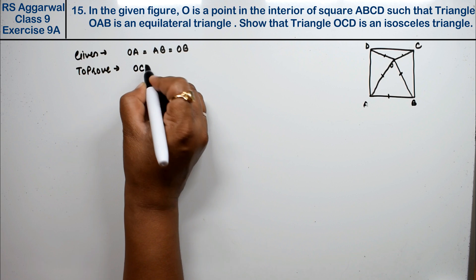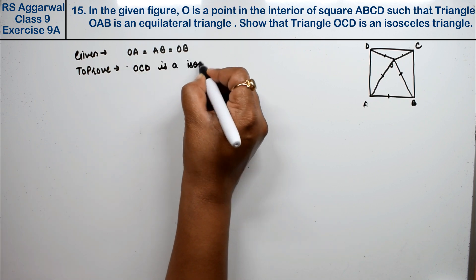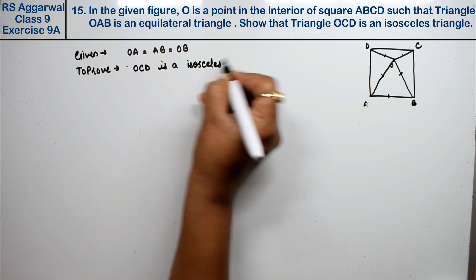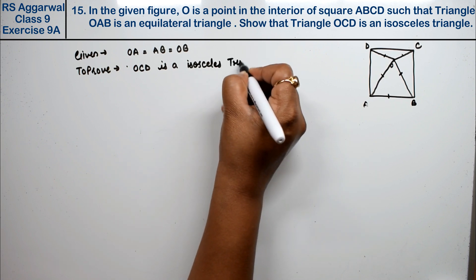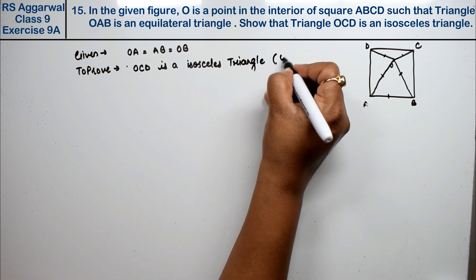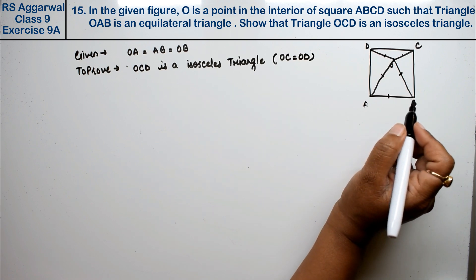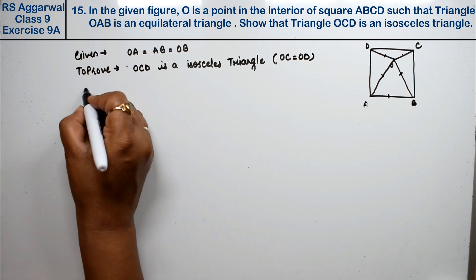To prove: Triangle OCD is an isosceles triangle. For this, we need to prove that OC equals OD. Now for the proof.